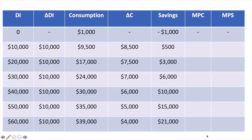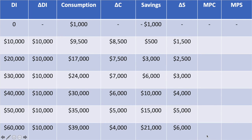Let's add in the change in savings column. The change in savings is calculated by subtracting the previous level of savings from the current level of savings. At the $20,000 level of disposable income, the individual was saving only $500 at $10,000 and now at $20,000 they are saving $3,000. This is a difference of $2,500, which indicates that a $10,000 increase in disposable income to $20,000 results in an increase in savings of $2,500. Use this approach to fill out the column. In the next slide I'll share the final values of the MPC and MPS.